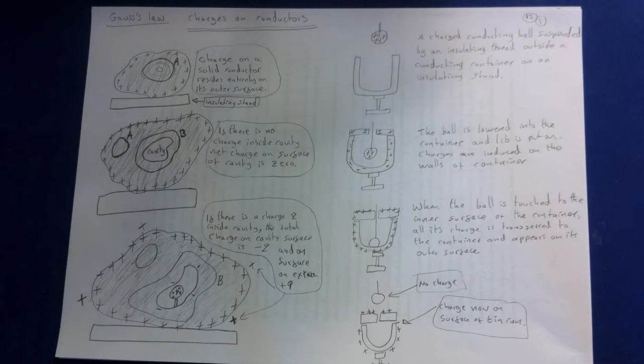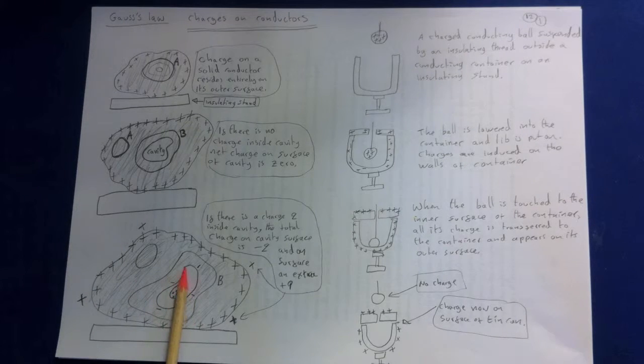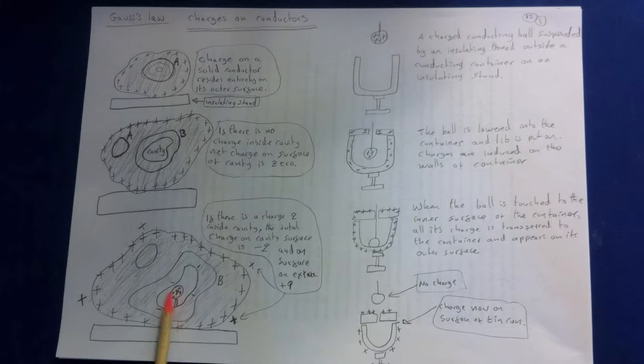Suppose a conductor is placed inside the hollow cavity carrying a charge Q. I've denoted it here as four plus charges. According to Gauss's law, the net charge inside this surface must be zero. We must have opposite charges on the inside of this cavity.